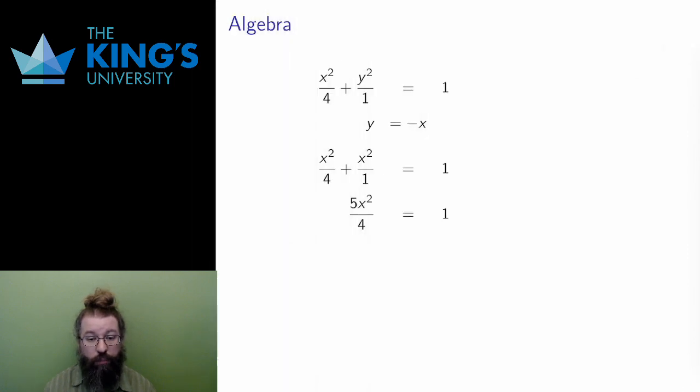From this point, I solve by multiplying by 4, dividing by 5, and then taking the square root. That produces two values for x, both the negative and the positive square root.